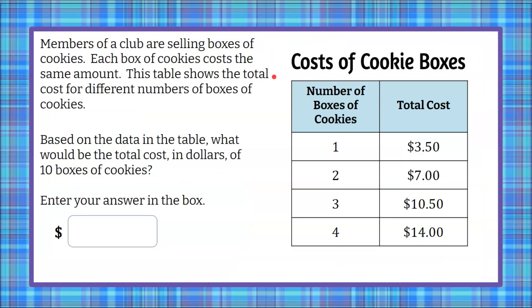Here's our question today. Members of a club are selling boxes of cookies. Each box of cookies costs the same amount. This table shows the total cost for different numbers of boxes of cookies, right here. Based on the data in the table, what would be the total cost, in dollars, of 10 boxes of cookies?